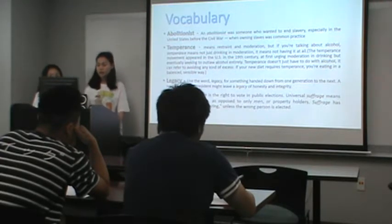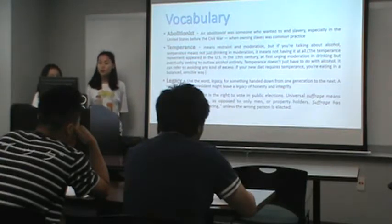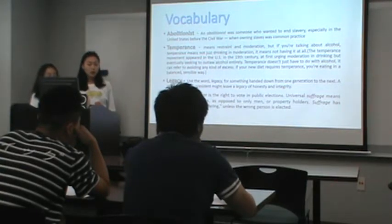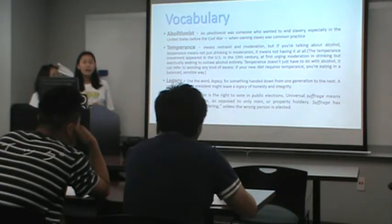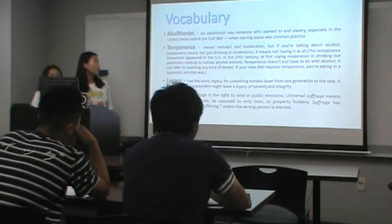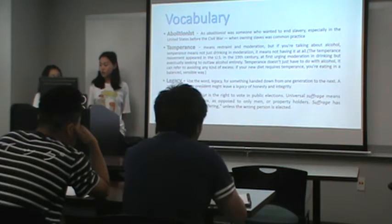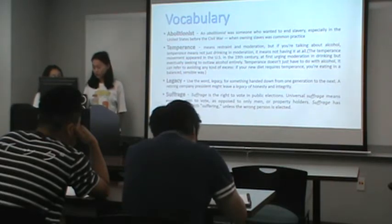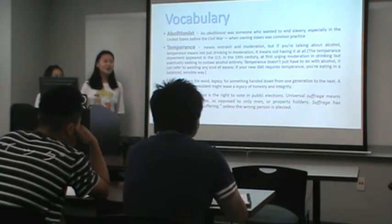Here are the vocabulary. First of all is abolitionist. An abolitionist was someone who wanted to end slavery, especially in the United States before the Civil War. Second is temperance.